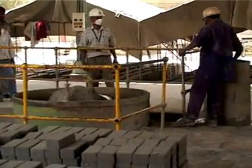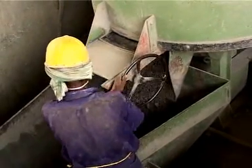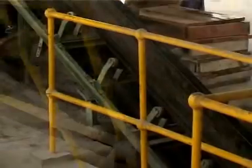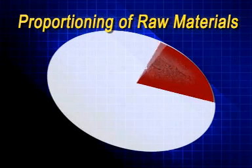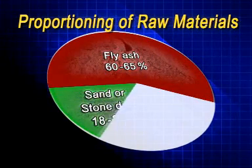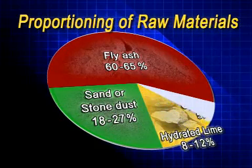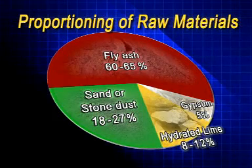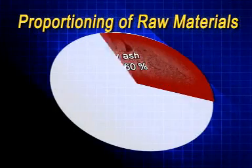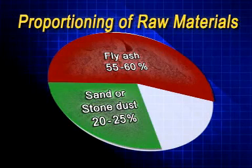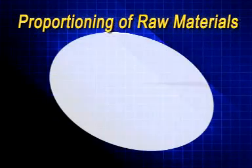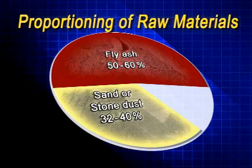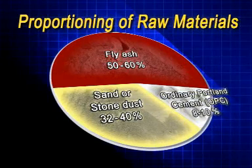Proportioning of raw materials is an important aspect of ensuring quality of ash bricks. The proportioning will depend on the quality of the raw materials and the class of brick required. Generally, the following mix proportions give a compressive strength of 75 to 100 kg per square centimetre. First: fly ash 60–65%, sand or stone dust 18–27%, hydrated lime 8–12%, and gypsum 5%. Second: fly ash 55–60%, sand or stone dust 20–25%, sludge lime 15–20%, and gypsum 5%. Third: fly ash 50–60%, sand or stone dust 32–40%, and ordinary Portland cement (OPC) 8–10%.